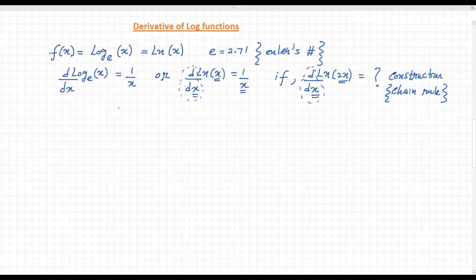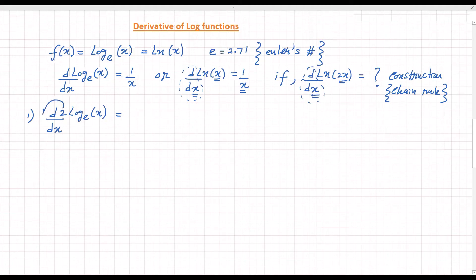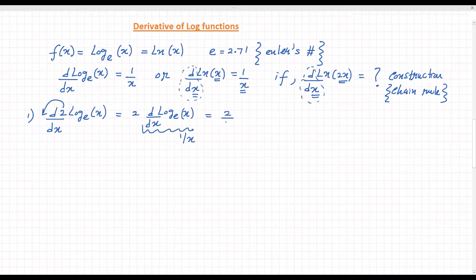Let's look at a few examples. For the first example, if you have d/dx of 2·log base e of x, since 2 is a constant we can take it out: 2 · d/dx of log base e of x. Since d/dx of log base e of x is 1/x, the answer is 2 divided by x.